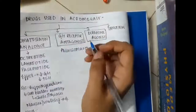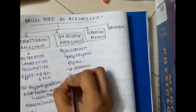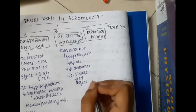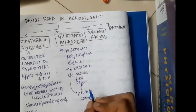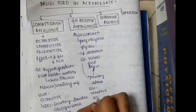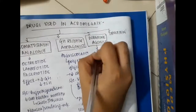Growth hormone receptor antagonists include pegvisomant, which is a polyethylene glycol conjugate that decreases clearance. Side effects include visual field defects and pituitary adenoma enlargement, which can cause visual field defects. Pegvisomant is used in the treatment of resistant acromegaly and is also safe in pregnancy.